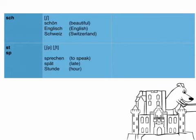Then we have S-T and S-P. Here we actually just have an S-C-H-P or S-C-H-T. Because it would be a bit long to write it that way, it's really pronounced Šp or Št. Examples: Sprechen, Spät, Stunde. Once again, please speak with me: Sprechen, Spät, Stunde.